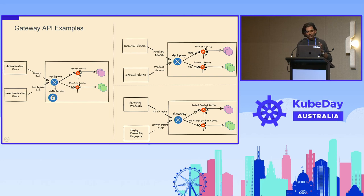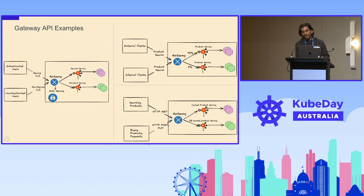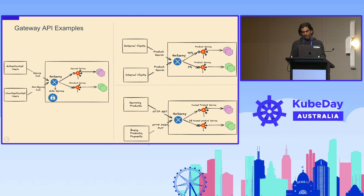Let's look at a few examples. The first is a security-related use case where we have a secure call and a non-secure call. If it's a secure call, we can call to an external auth service, get the credentials validated, and if we get the proper response, send it to the secure service. The second example shows traffic splitting, where we route 95% of traffic to one product service and 5% to another — useful for canary rollouts when releasing new versions. The third approach uses different attributes like HTTP method, query params, or path params to determine which service to invoke.